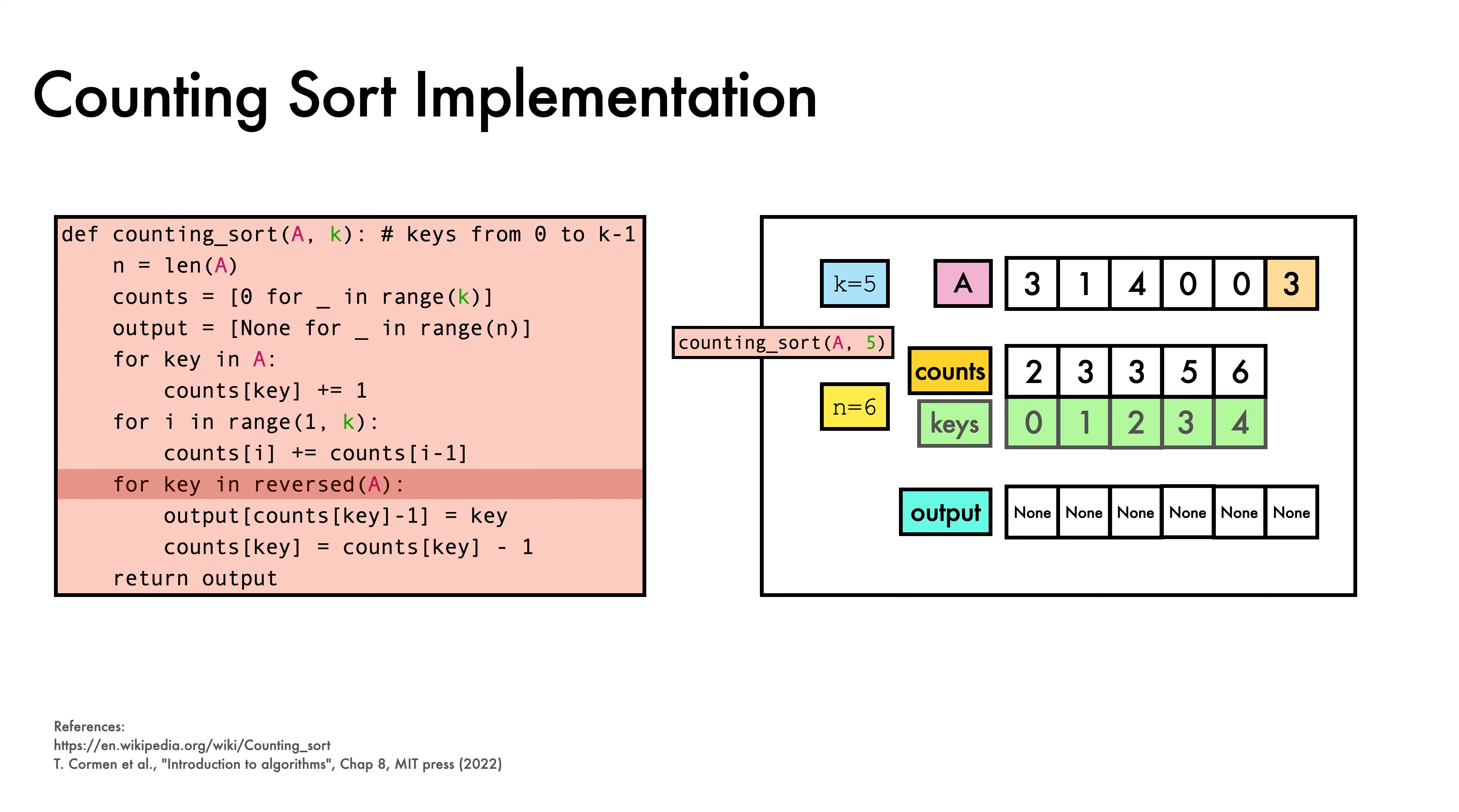We now reach our third and most interesting for loop. Starting from the last key in A, we examine the counts array and insert the key into the output location of this count minus 1. Then we decrement the count for key 3 by 1. We move one step backwards along A, look up the output location for key 0 and insert it, then decrement the count for key 0.